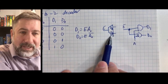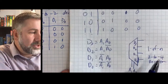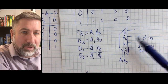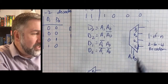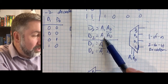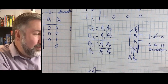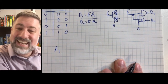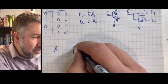Now let's take this 1-to-2 decoder device and use it to construct the 2-to-4 decoder. If we look, the first two lines of the 2-to-4 truth table are when A1 is 1, and the bottom two lines are when A1 is 0. We can actually take A1 and use it as the enable for two of these smaller devices.